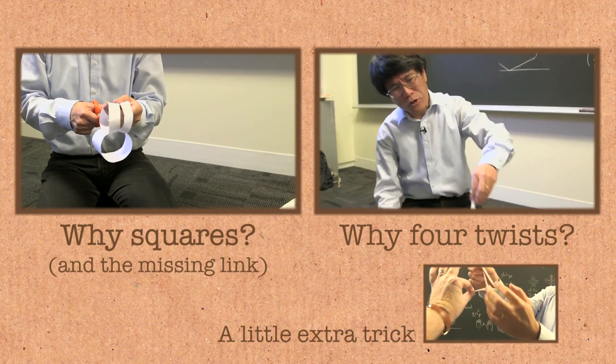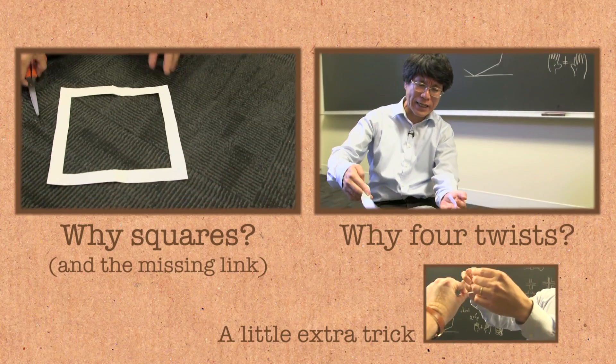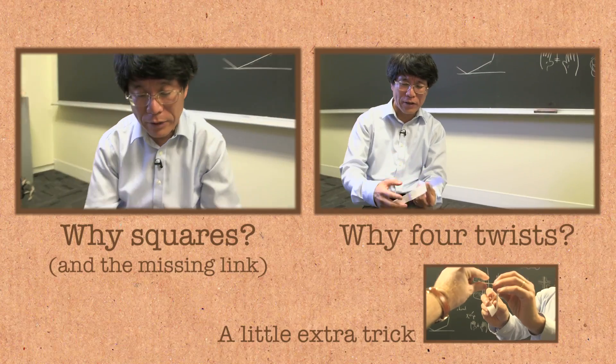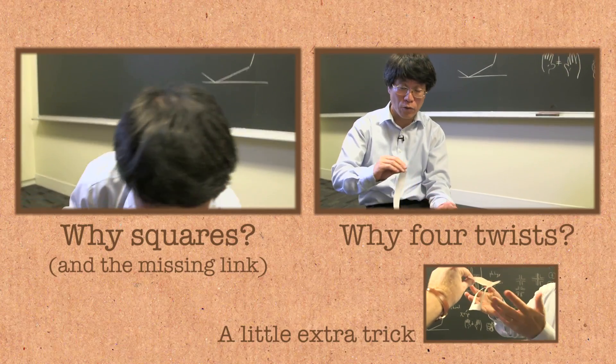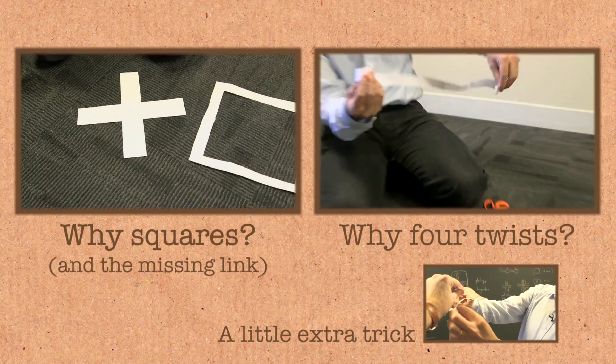Where do the extra two twists come from? You know, as I say, we seem to have proved a moment ago that the object should have two twists, but it had four twists. And it comes from the following interesting effect.